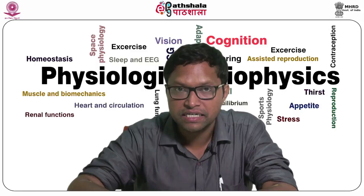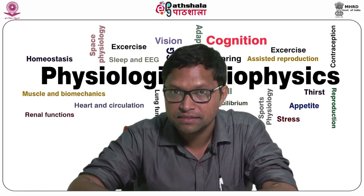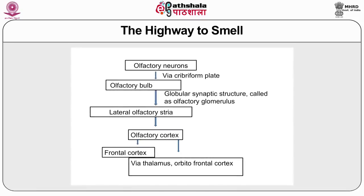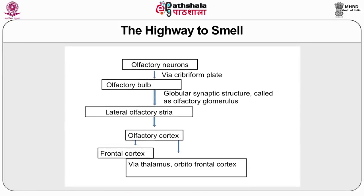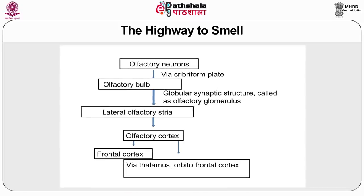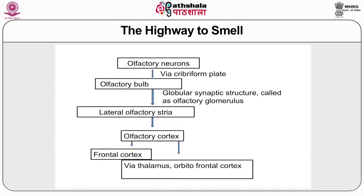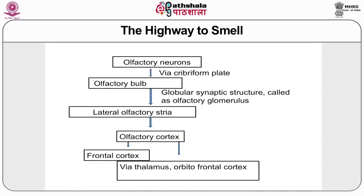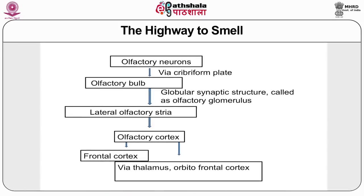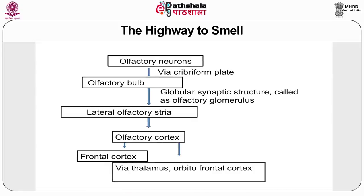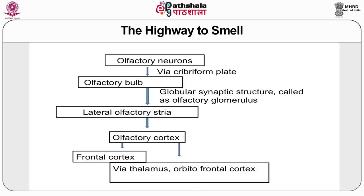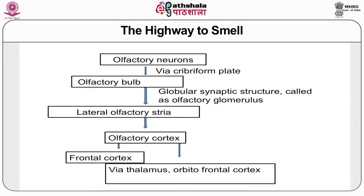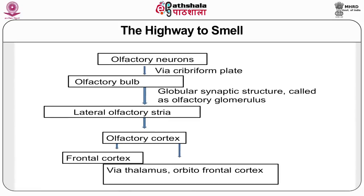If the receptor potential exceeds its threshold, an action potential in the olfactory nerve — the first cranial nerve — is triggered. The axons of olfactory sensory cells travel through the cribriform plate of the ethmoid bone to join the olfactory bulb. Inside the bulb, the neurons synapse with mitral and tufted cells, forming clusters known as glomeruli. Nearby glomeruli are interconnected by periglomerular cells, which are inhibitory GABA-releasing cells. Mitral cells are also interconnected by granule cells.